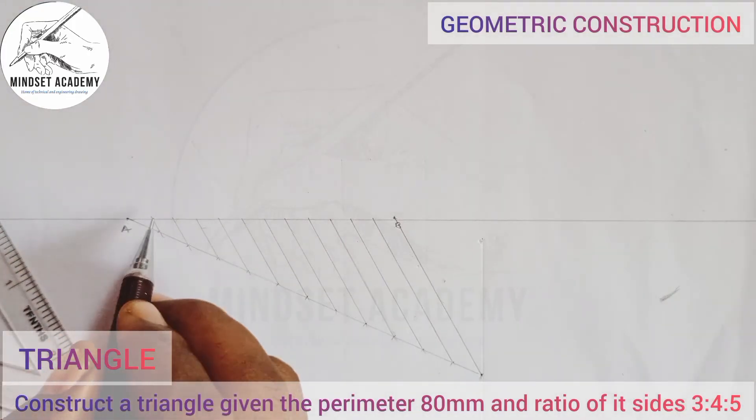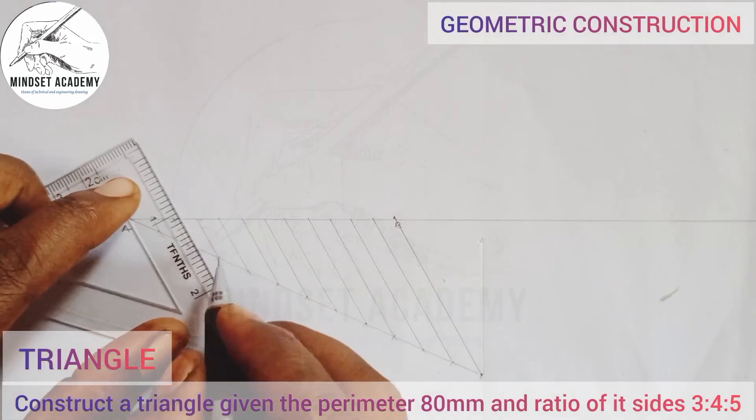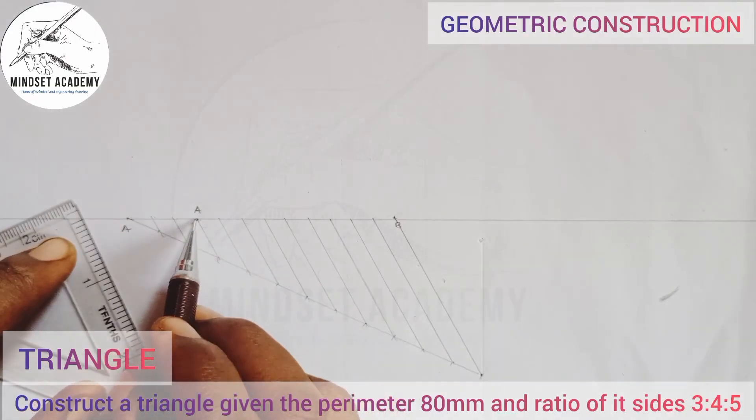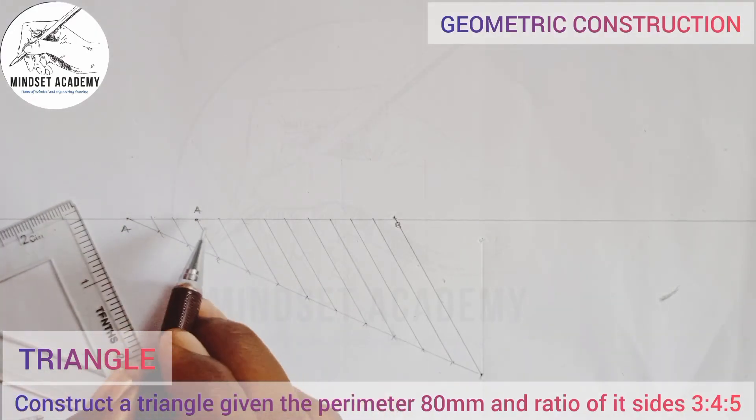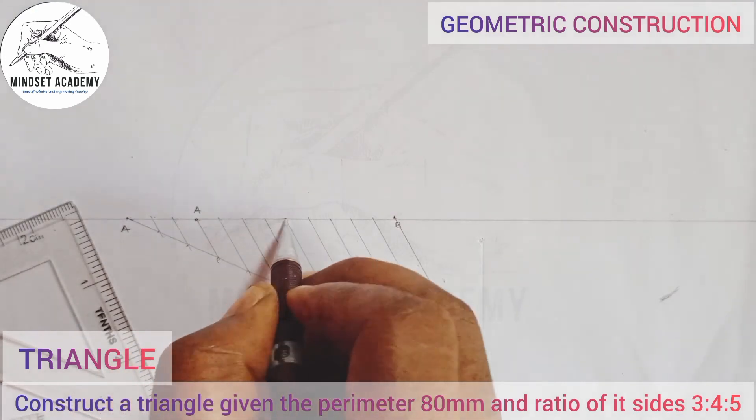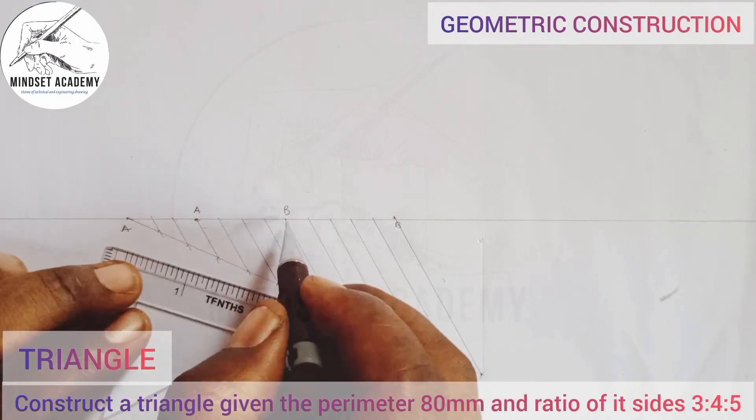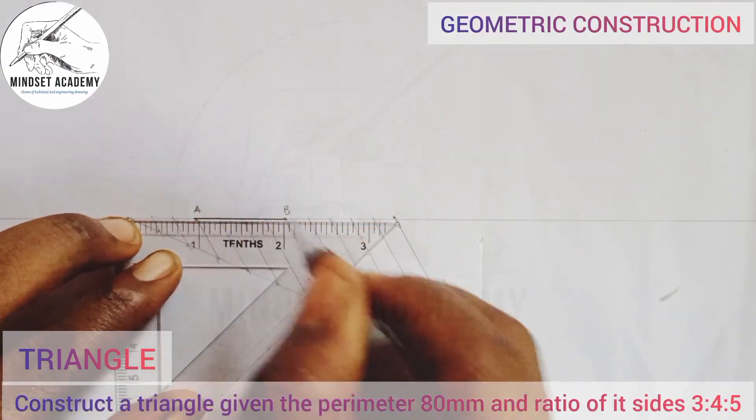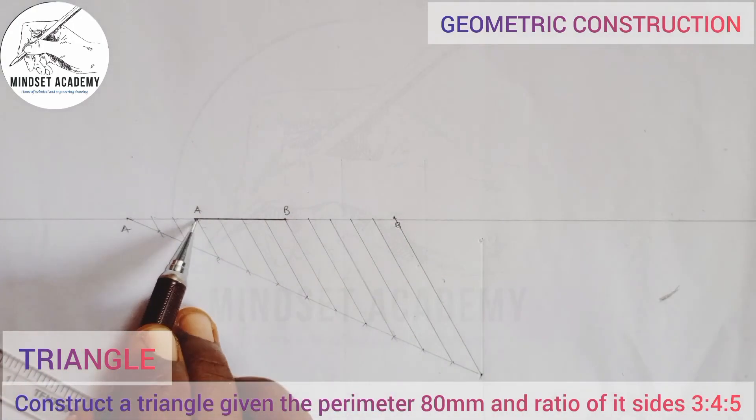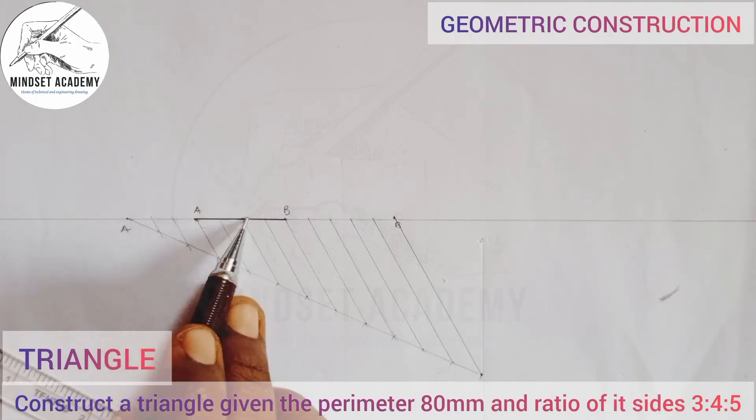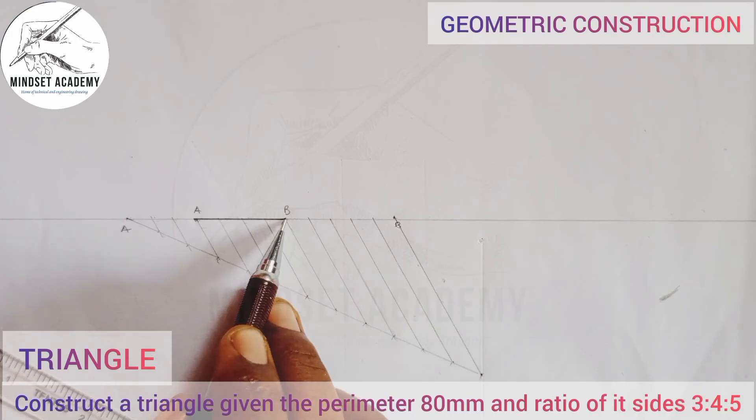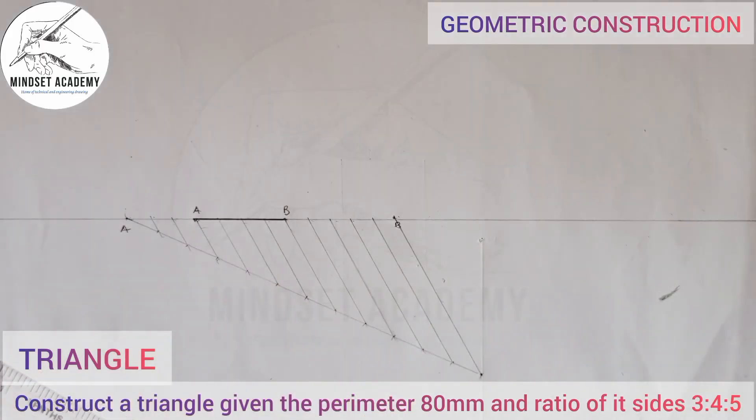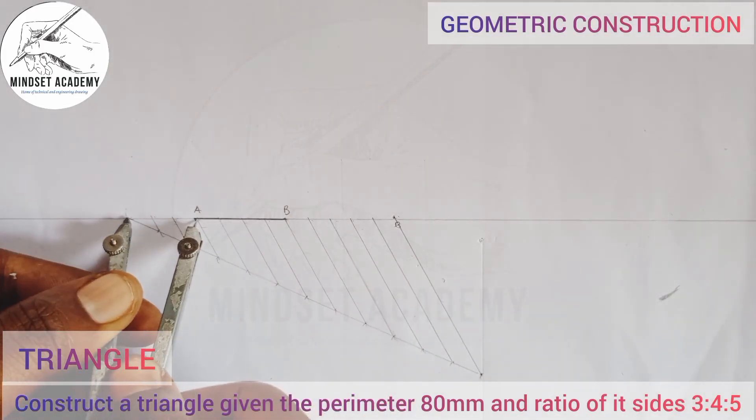Since it's giving a ratio, the first one is 3, so starting from here: 0, 1, 2, 3. This third point from A is what we need. Then the next one is 4: 0, 1, 2, 3, 4. This is the second base. So 3 is to 4, and this 4 is to 5: 0, 1, 2, 3, 4, 5. Those are the ratios.